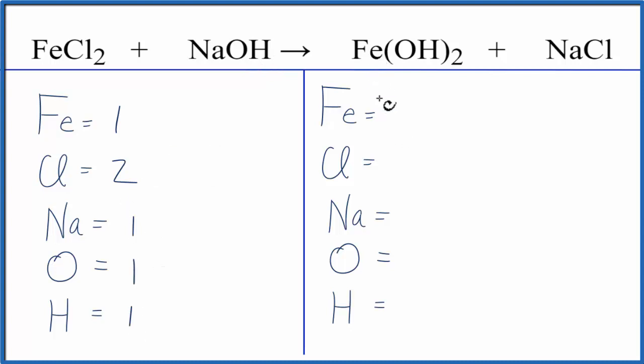On the product side, we have 1 Fe, and then this chlorine, we have 1 here, sodium 1. This 2 applies to everything in parentheses, so we have 2 times the 1 oxygen, 2 oxygens, and then 2 times the 1 hydrogen, 2 hydrogens.